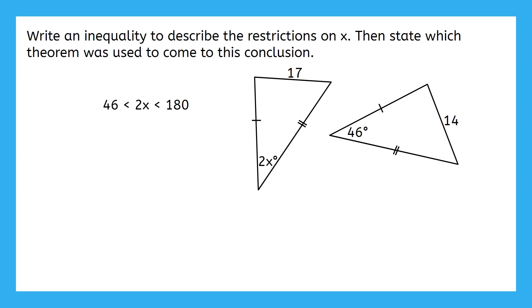We do need to get x by itself as well. So, how do we get rid of the coefficient of 2 in front of it? We can divide by 2. 46 divided by 2 is 23. 2x divided by 2 is just x. And 180 divided by 2 is 90. This is our final answer, along with the theorem that we used.